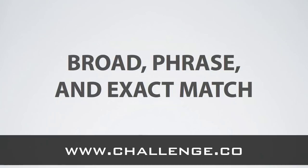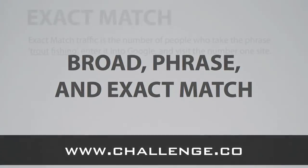If the traffic numbers look good then we can make an educated guess on how many visitors we might receive to our website if it appears in the top 10 of Google. For any particular phrase, Google gives us three sets of numbers. These are the exact match traffic estimate, the phrase match traffic estimate, and the broad match traffic estimate. This may sound a little confusing but I'll explain what each of these are and how it relates to traffic. I'm going to use a real example as I go through these, so let's start with exact match.